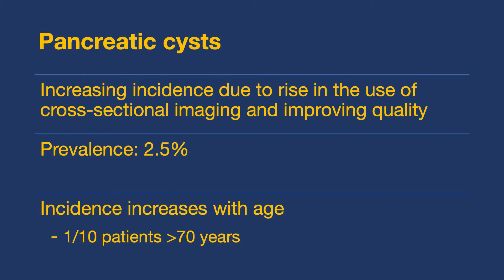The incidence increases with age. For example, if you were to scan everybody over the age of 70, about 1 in 10 people would have a pancreatic cyst. The majority of these cysts are small — the average size is less than 1 centimetre. They are common, and we're all going to see them, including general medical physicians. When classifying cysts, there are lots of different types. Most people come up with pseudocyst, but it's actually not the most common.